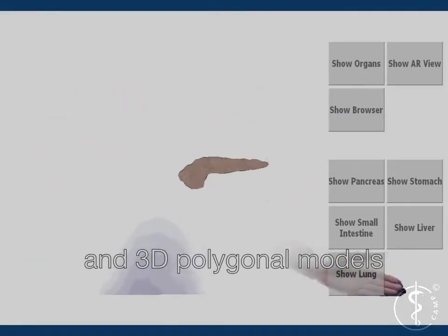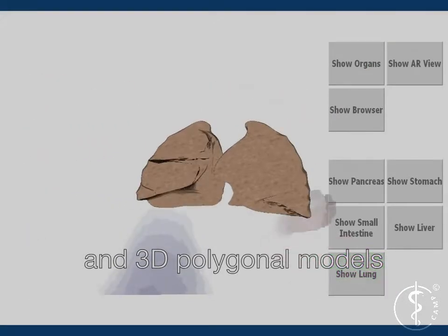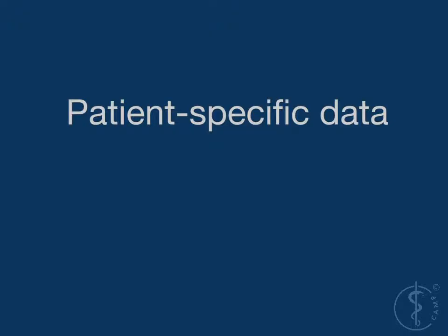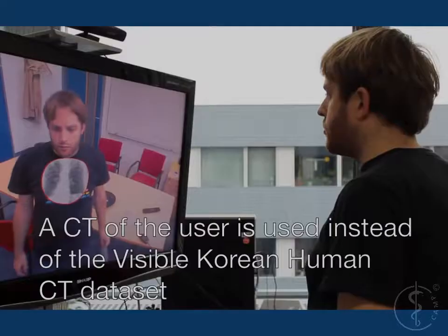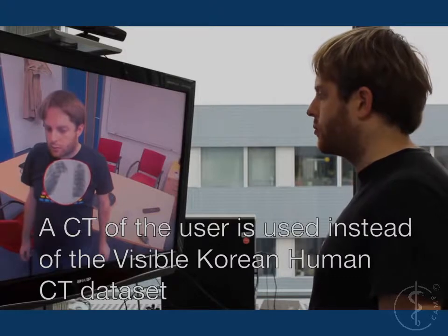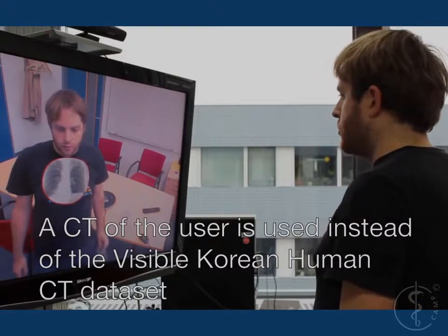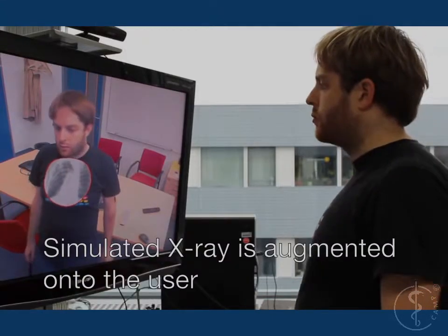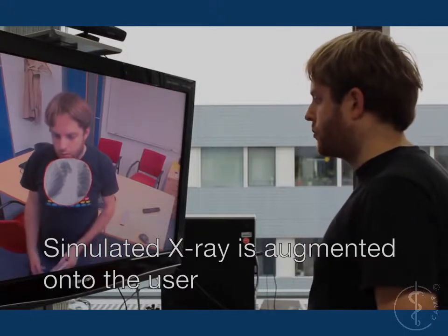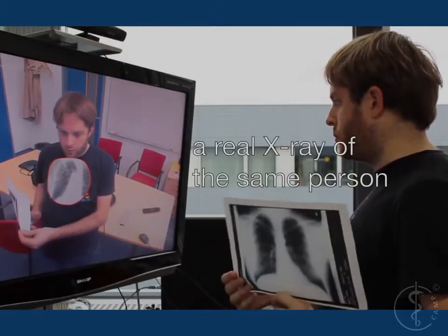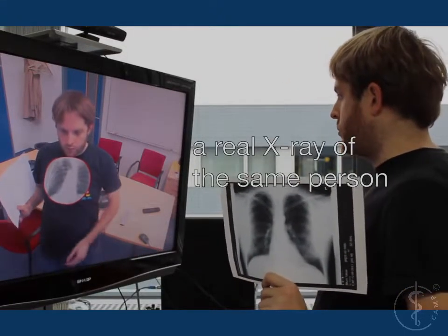For teaching our system uses the Visible Human dataset. But if a CT of a person is available, for example when using such a system for doctor-patient communication, also this CT can be used. In this example an X-ray image is simulated from a CT of the user. For comparison the printed image shows a real X-ray of the same person.